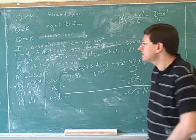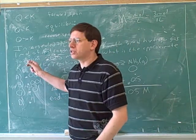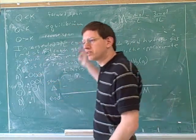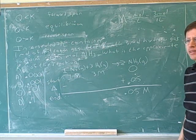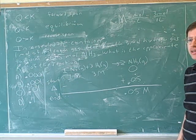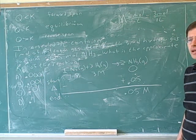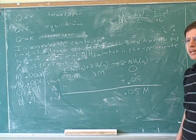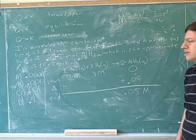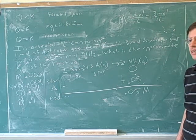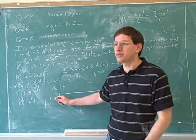Not both of them. Just one of them. So the Kc should only be based on the concentrations at equilibrium. Which of these rows represents equilibrium? Which of these rows represents what the concentrations will be in equilibrium? End. Yeah.